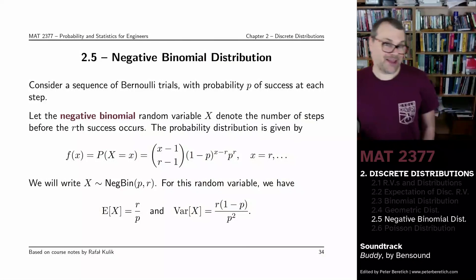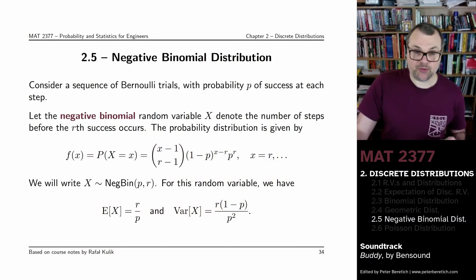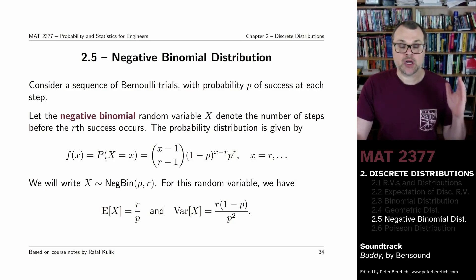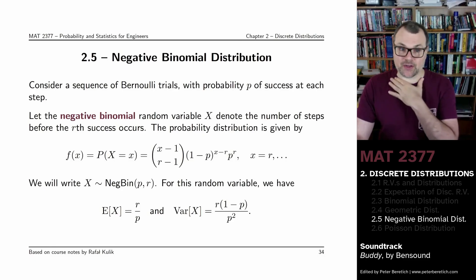Now instead of counting the number of trials required for obtaining your first success, you might be interested in counting the number of trials required before you record R successes. So here we have a new parameter value R.